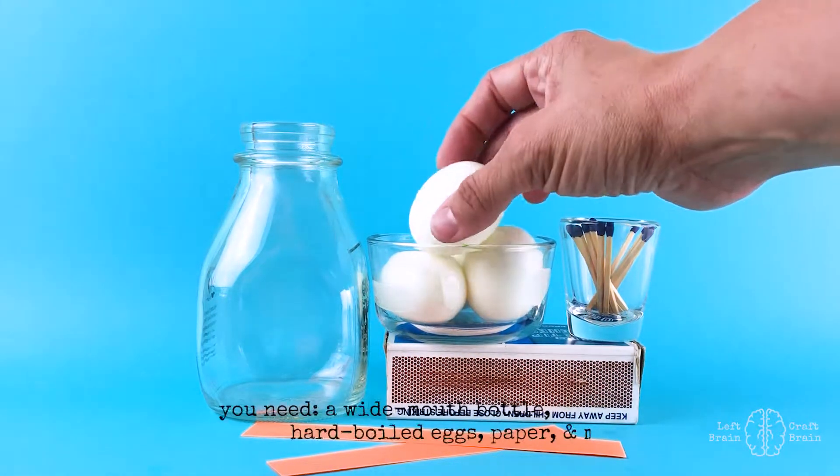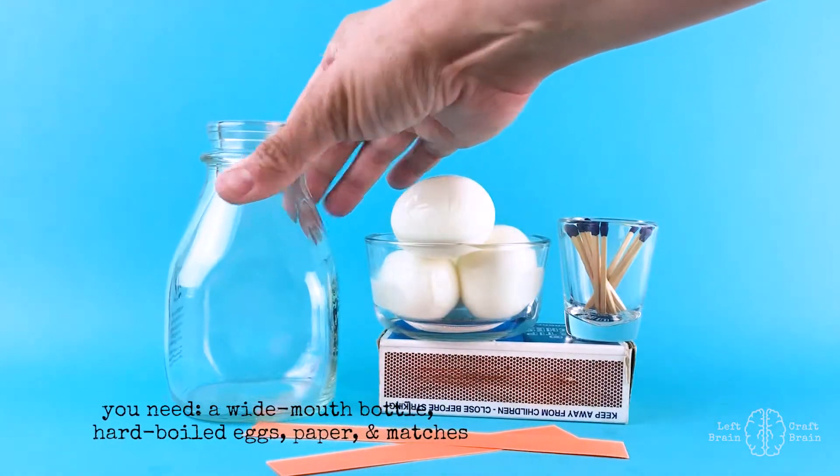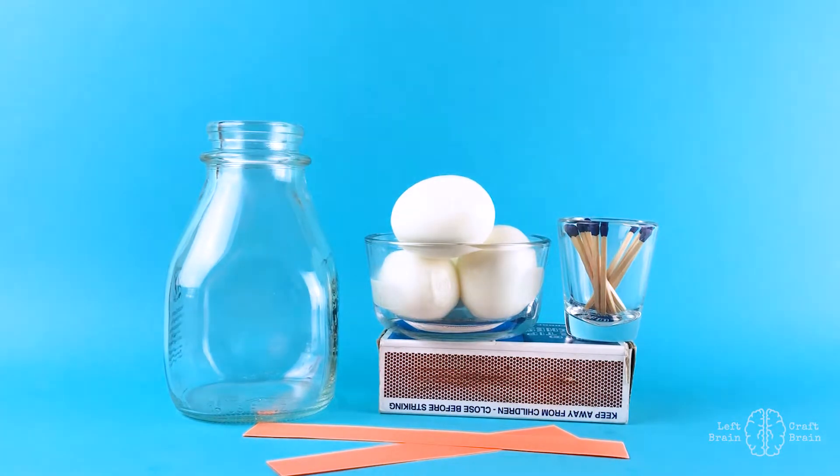So what you need today is a milk bottle. I like these because they have a nice big wide mouth. Some hard-boiled eggs. You're gonna want a few extra, not just one, because you'll probably want to do this experiment a few times to see it happen.